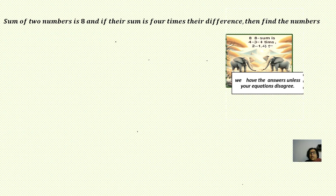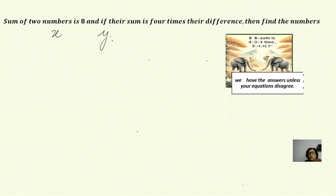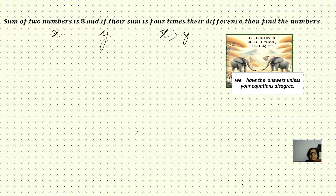The first question is: sum of two numbers is 8, and if the sum is four times the difference, then find the numbers. So let us take the numbers as two variables x and y. Obviously one will be the greater number and one will be the smaller number. I'm assuming x is greater than y. The first part gives us x plus y is equal to 8. When we are adding it up we are not going to create any problem.